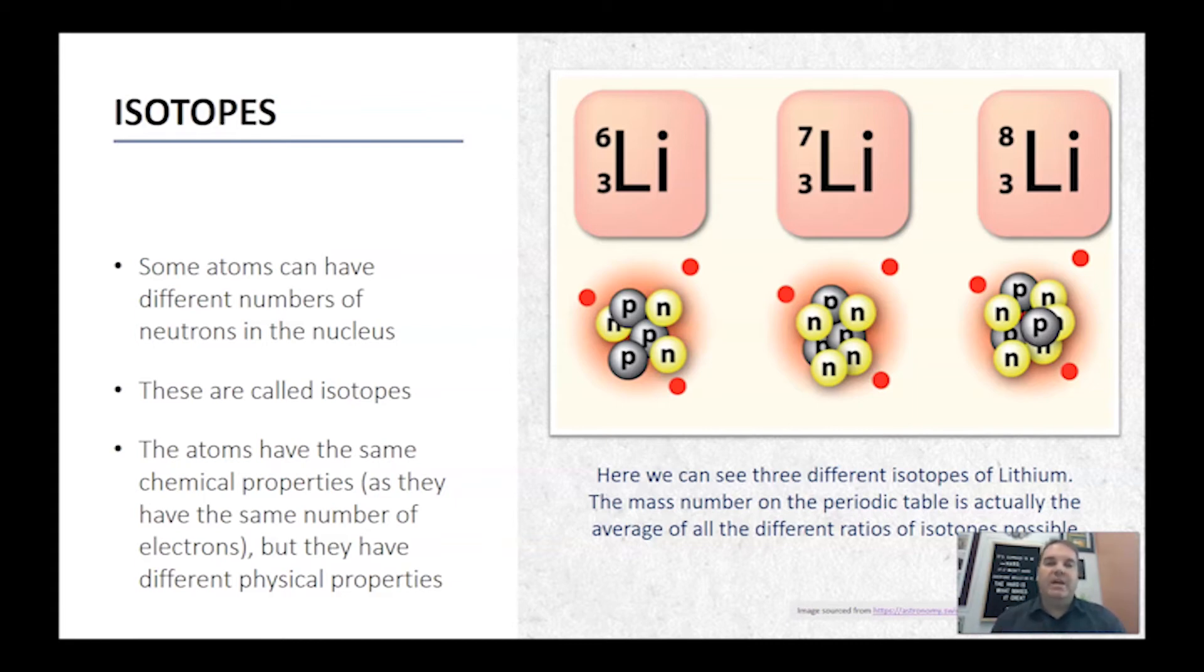So isotopes are the reason why mass numbers on the periodic table are not whole numbers. Now the important thing to understand about isotopes is that they have the same chemical properties, because chemical properties are determined by the number of electrons in the outer shell. So each of these lithium has one electron in its outer shell. So these are going to have the same chemical properties, but they have different physical properties simply because they've got different masses.